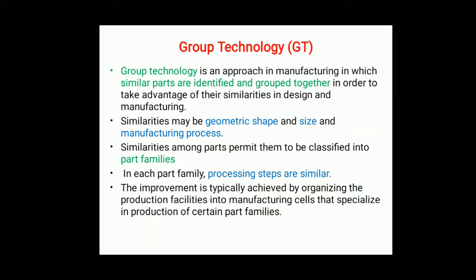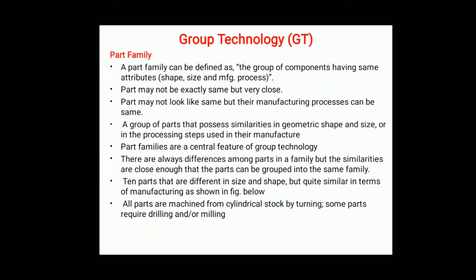First, we create a group according to geometrical size, shape, and manufacturing process. Then within each group, we create part families based on the same procedure or same attributes and component design. For example, group one is divided into part families, and group two is also divided into part families. This structured approach is better for the manufacturing process.